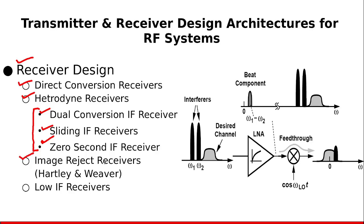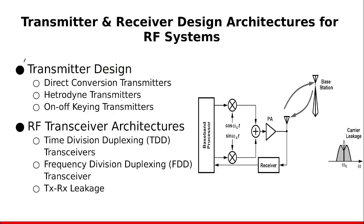In image reject receivers, we try to simplify the design of filters by using image rejection techniques. We will discuss the Hartley and Weaver architectures. Then we conclude with low IF receivers. After that, we discuss different transmitter design architectures — direct conversion transmitters, heterodyne transmitters, on-off keying transmitters — and the pros, cons, and design issues related to these transmitter designs.